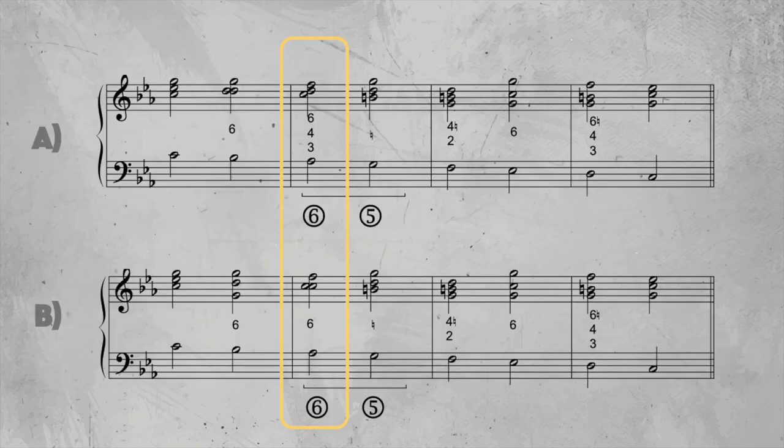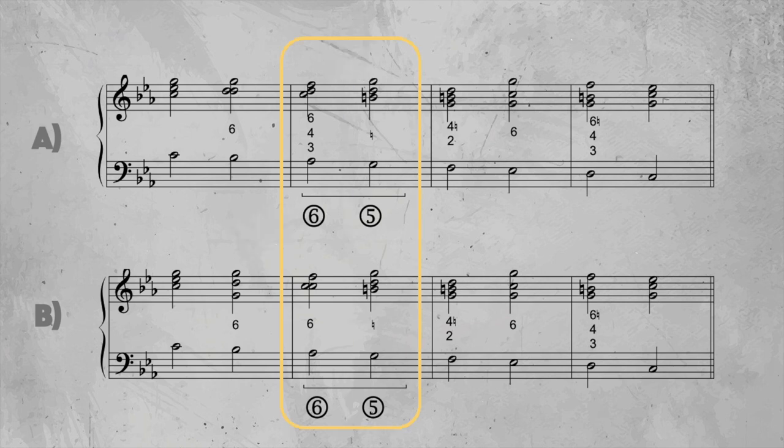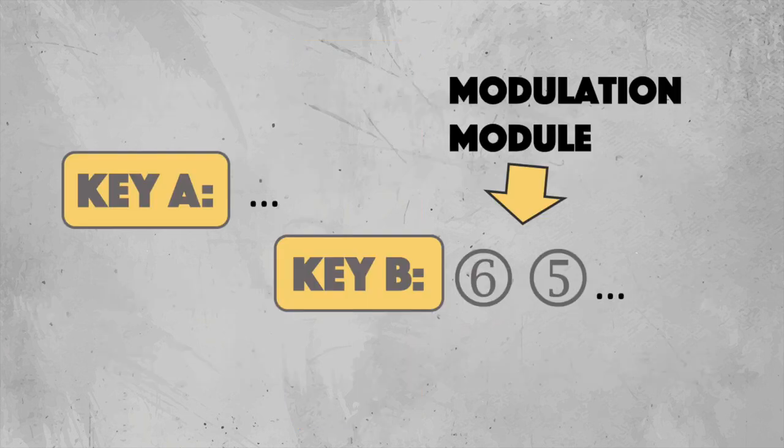Depending on what source you consult, you'll find a simple 6th chord or the more dissonant half-diminished 4-3 chord above the descending 6th degree. So the progression from 6 to 5 can be, and actually was, used as a two-chord module that you can insert at a certain point — for example, when you want to switch keys.